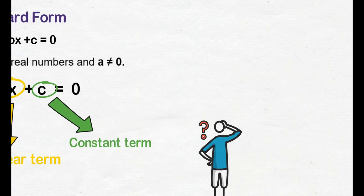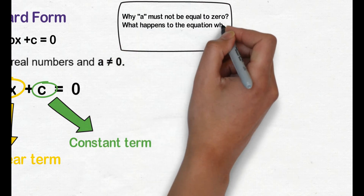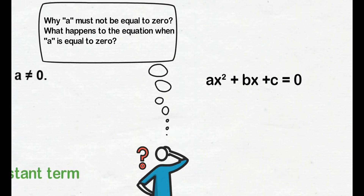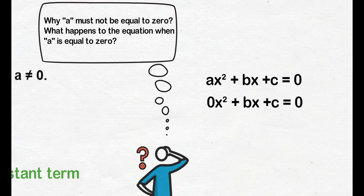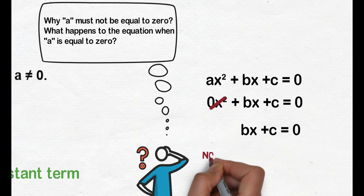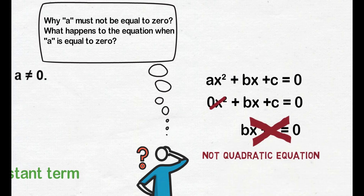Why can't a be equal to 0? What happens to the equation if the value of a is 0? If we substitute 0 for a in the equation, we know that any number multiplied by 0 is 0, so the variable with exponent 2 gets cancelled out. What remains is only bx plus c, and this can no longer be considered a quadratic equation since there is no variable with an exponent of 2.